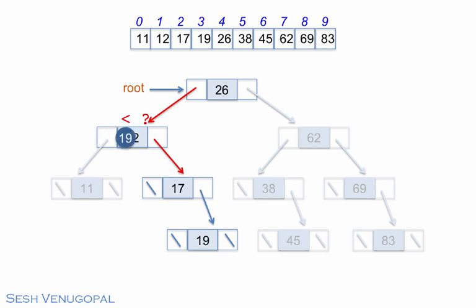This takes the search to 17, where again, 19 is neither equal to nor less than 17. So after another right turn, we land on 19 and success.